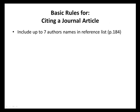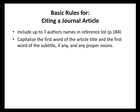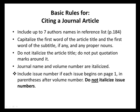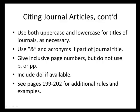Citing a journal article: for journal articles, we include up to seven authors' names in the reference list. We capitalize the first word of the article title, the first word of the subtitle if any, and any proper nouns. Only the title of the journal is italicized, along with the volume number. You include the issue number if each issue begins on page one — some journals are consecutively numbered throughout the volume year, in which case you would not use the issue number. Do not italicize the issue numbers. Use uppercase and lowercase as necessary, and only use the ampersand and acronyms if they are part of the journal title. Give the inclusive page numbers but do not use the initials p. or pp., and include the DOI only if it is available.